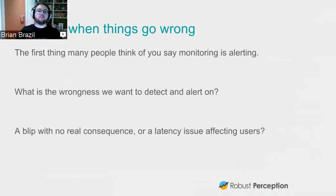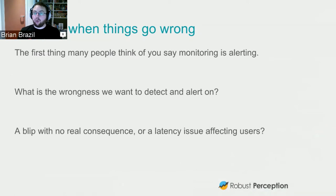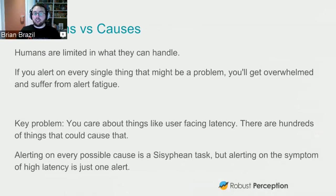The primary thing for monitoring is alerting. In Nagios, that's almost all it does. The question is: what wrongness do we want to detect? Do we want to look for a blip — like a packet lost due to a solar ray — or do we actually want to focus on latency affecting end users? Because at the end of the day, what matters is the product we're producing. If you alert on everything, that just isn't going to work. Humans are very limited in what we can handle — we can't work 24/7, we need sleep. If you alert on every single thing that could be a problem, you'll get alert fatigue or pager fatigue — basically burnout, which is bad.